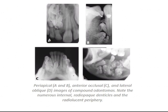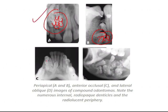Now we will see images — very important. The more images you see, the clearer your concept gets. This is an anterior occlusal and lateral oblique image of compound odontoma. You can appreciate several malformed tooth-like structures here. It is located in the anterior maxilla.